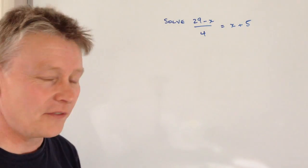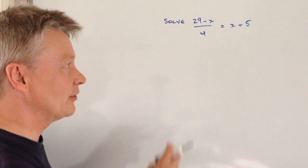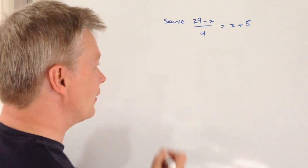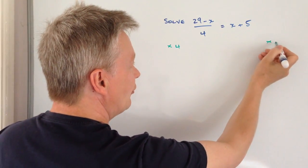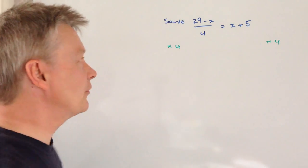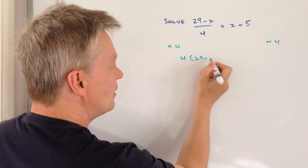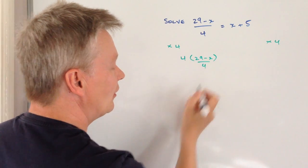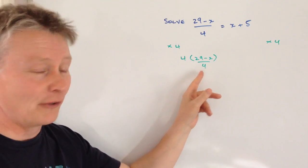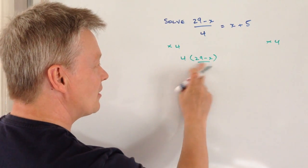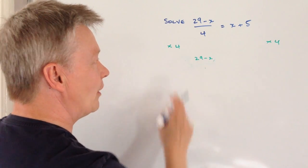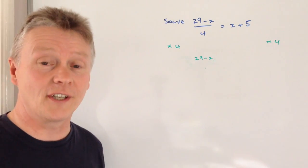The easiest way of doing this is to make sure first that we get rid of this denominator of 4. The way I'm going to do that is I'm going to multiply both sides by 4, because if I multiply this side by 4, I've got basically 4 times (29 minus x) over 4. The 4 that's multiplied and the 4 that divides cancel themselves out, so I end up with just 29 minus x.